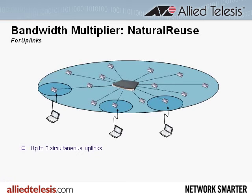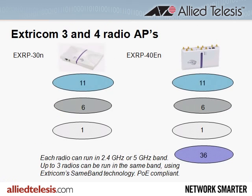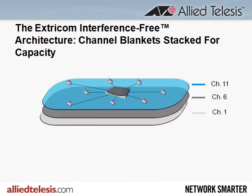Now let's add channels 1 and 6 to the Extracom deployment. The way we add channels 1 and 6 is by activating two more radios inside Extracom's multi-radio AP. In our use case, we are deploying the EXRP30N, shown on the left side of the slide. By activating the other radios inside the EXRP30N, we now have three blankets of wireless LAN coverage stacked for capacity.